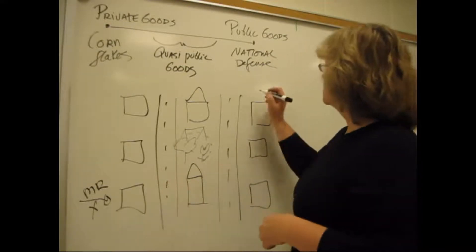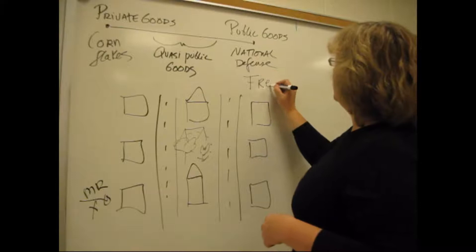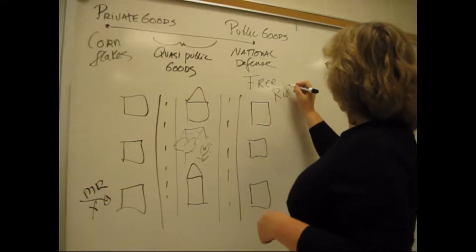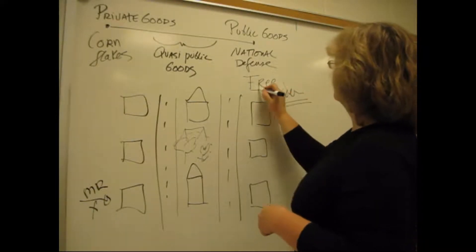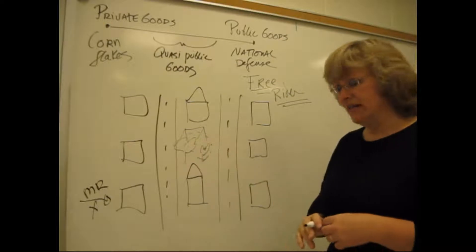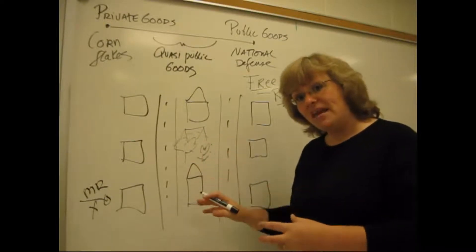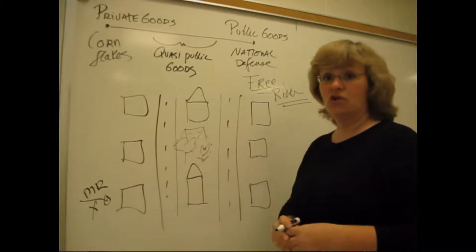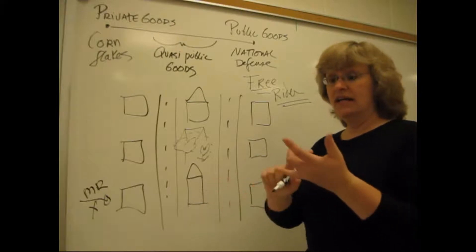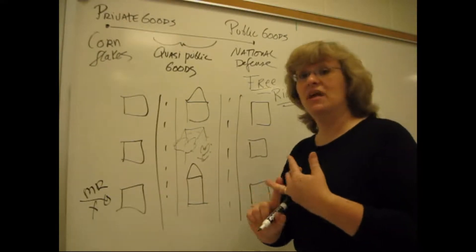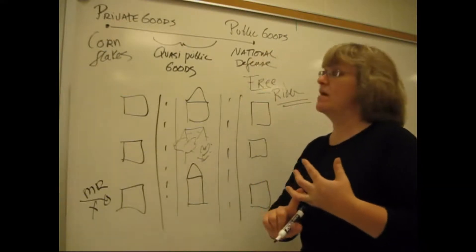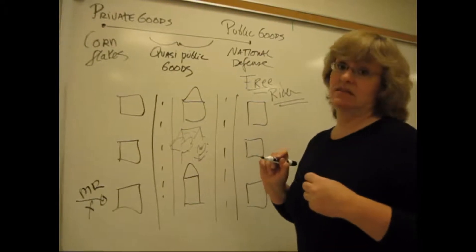Mr. X in this particular case is what we call a free rider. He's a free rider. He's enjoying the benefits of the production of this good without paying any of the cost. He can enjoy it along with everyone else and you can't exclude him from those benefits. That's what makes this a public good.